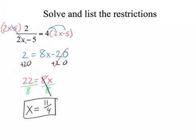That's your answer. But, restrictions. Our restrictions are what would make the denominator 0. Some of you can tell right away that's not 11 fourths, so we don't have to worry about it, but let me write it down.